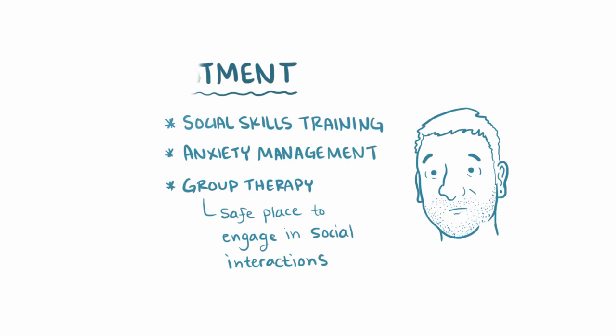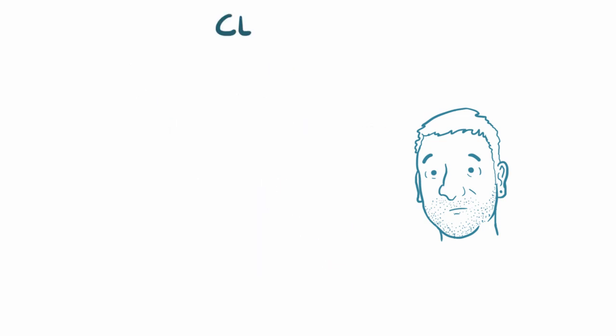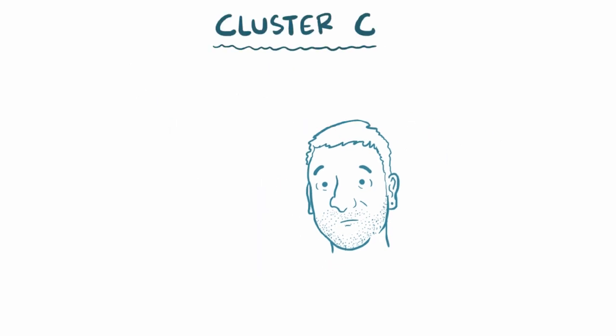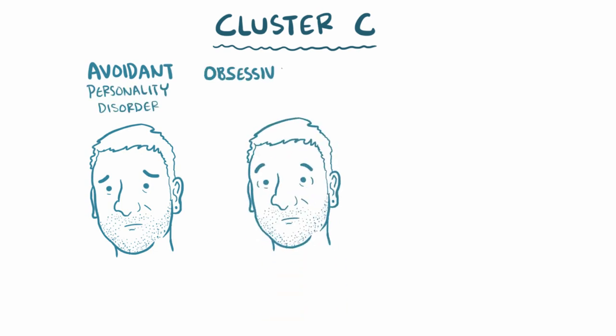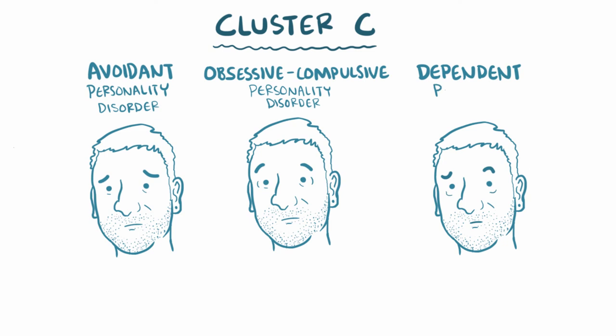As a quick recap, cluster C personality disorders are split into avoidant personality disorder, obsessive-compulsive personality disorder, and dependent personality disorder.